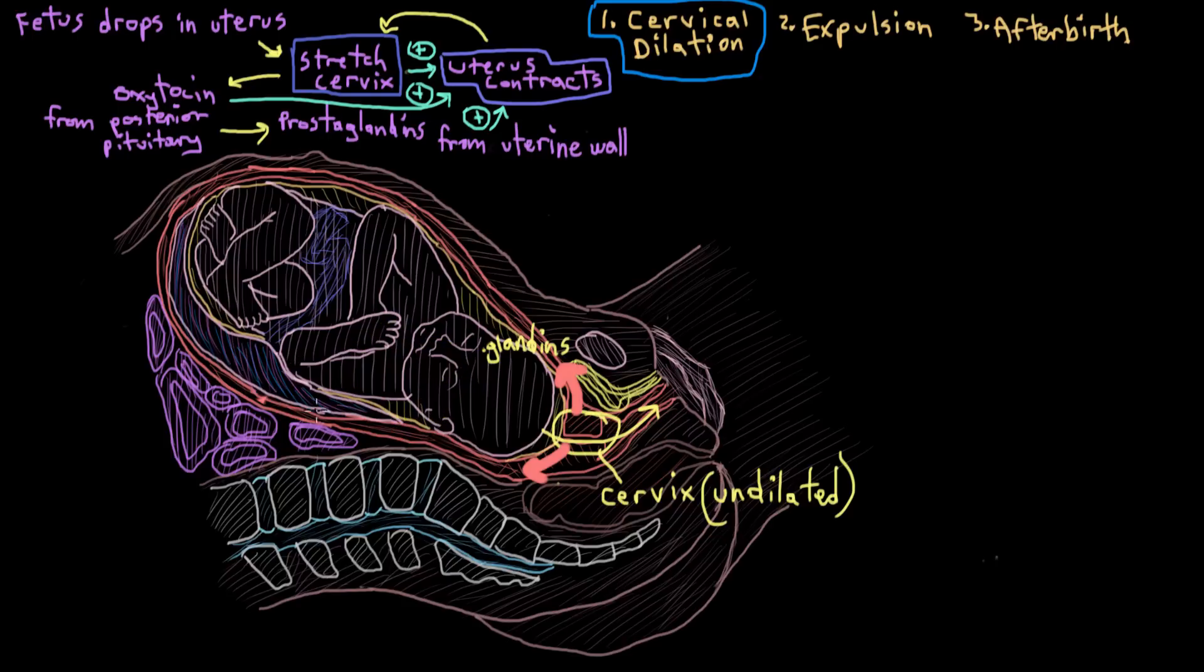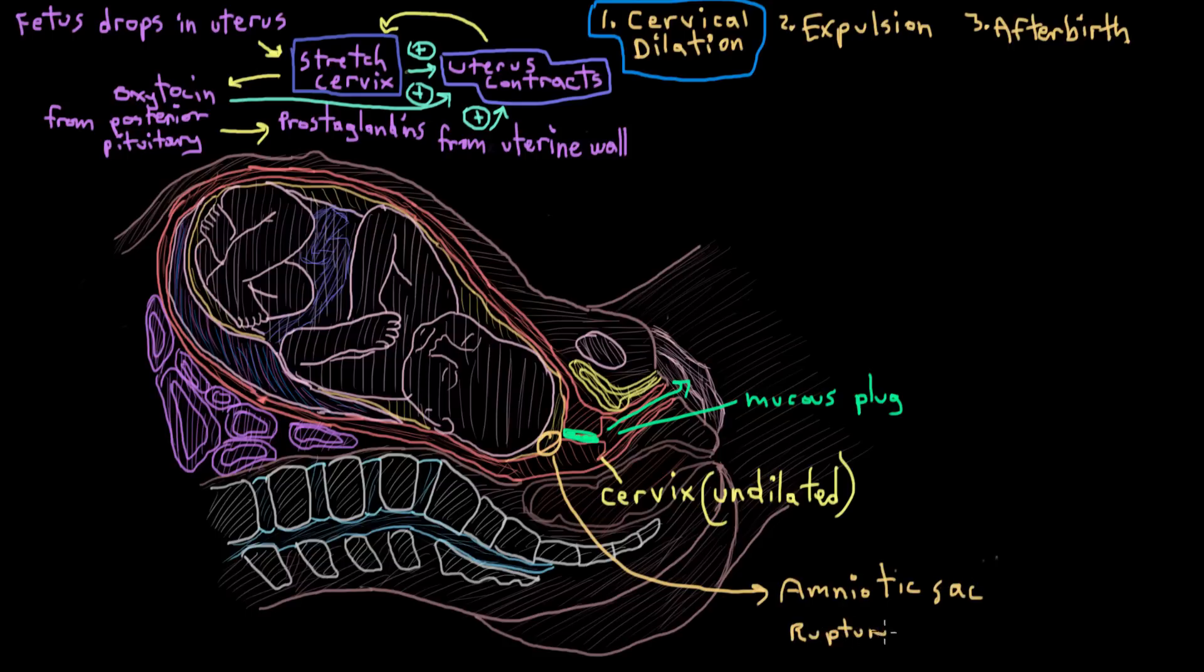So as the cervix dilates, this bit of mucus called the mucus plug that was stuck at the opening of the cervix to seal it up during pregnancy, that kind of comes out and gets discharged out of the vagina. And this can actually happen anywhere from a couple days before true labor to during labor. And it usually serves as a sign that labor is progressing. Also, there's this membranous sac that surrounds the fetus called the amniotic sac, and that'll rupture during labor and release its amniotic fluid. And that's what we always hear of being referred to as mom's water breaking. And I've drawn it here in this orange color.